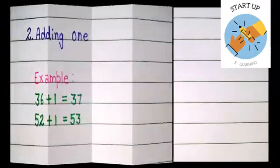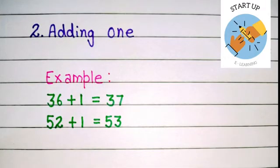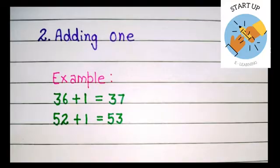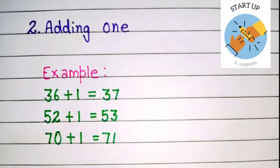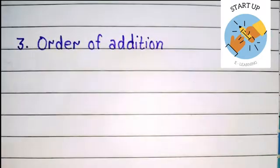52 plus 1 is equal to 53. 70 plus 1 is equal to 71. So we have seen when we were adding 1 to these numbers, the sum is the next number.